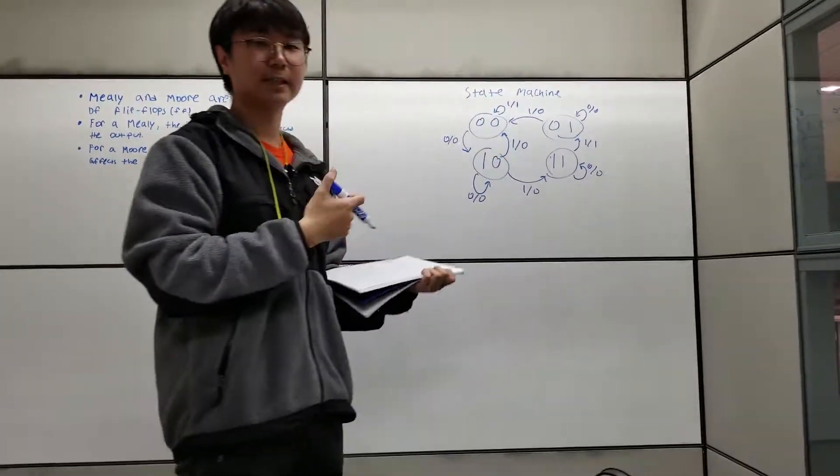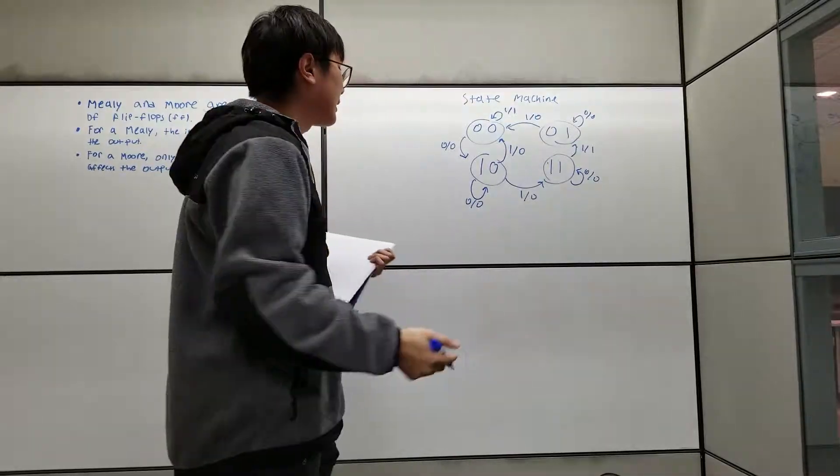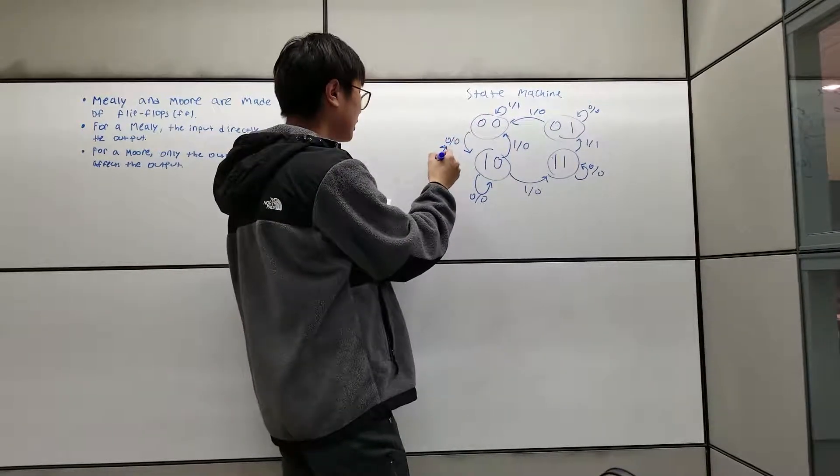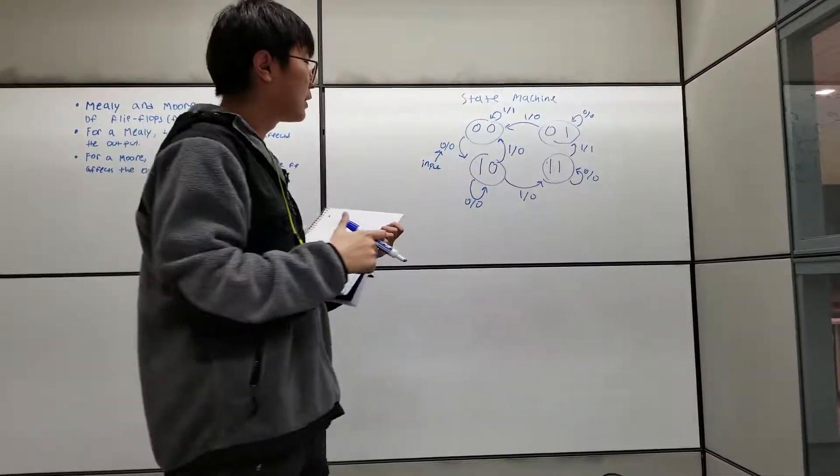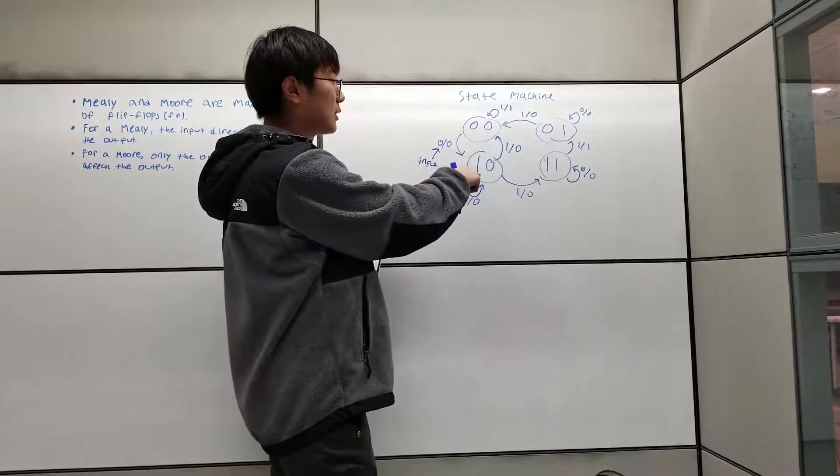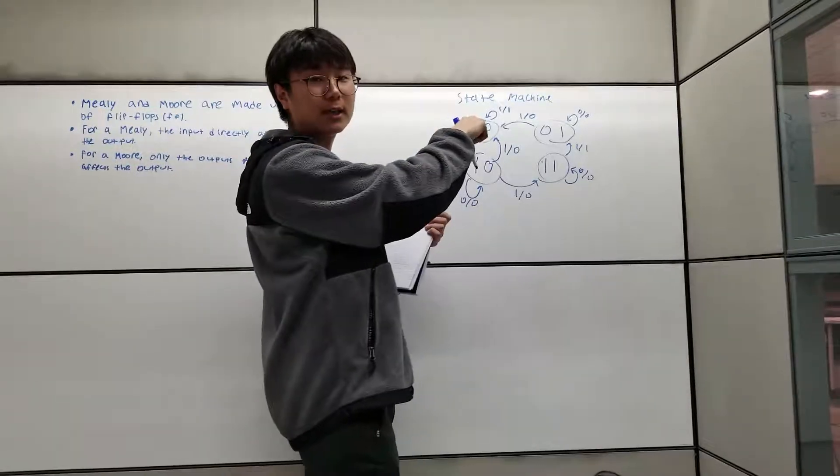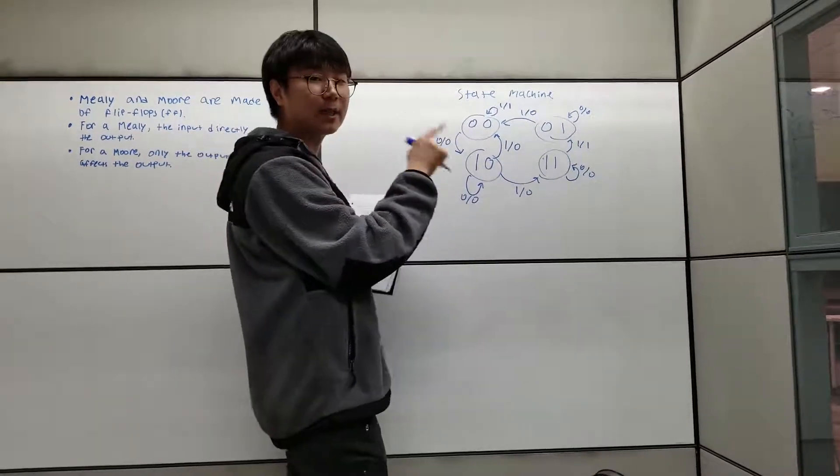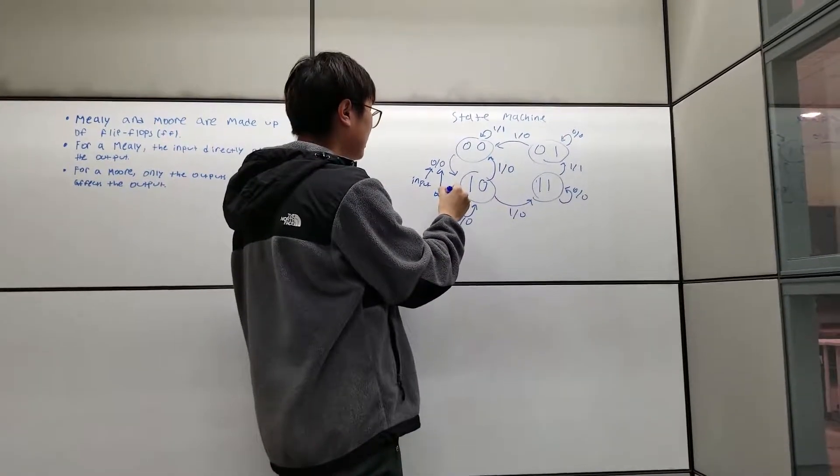This is an example of a Mealy state machine. You can see that there's two numbers. This number is the input. When it's 1, from state 0,0, it's going to go to 1,0. When it's 1, it's going to repeat back to 0,0. And the second number is the output.